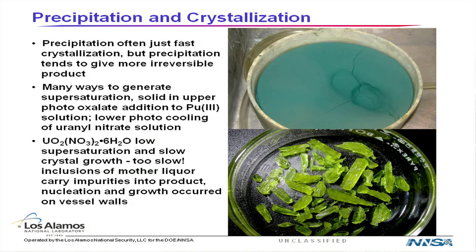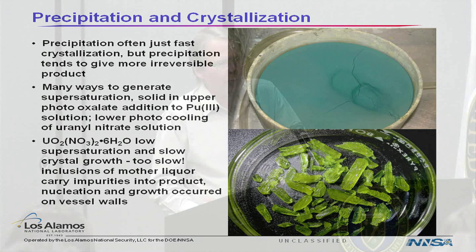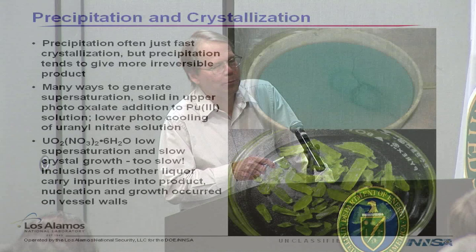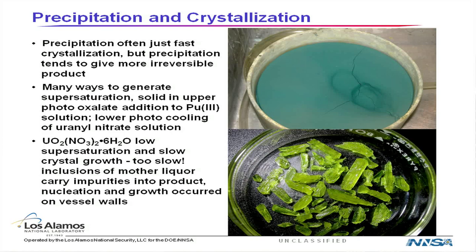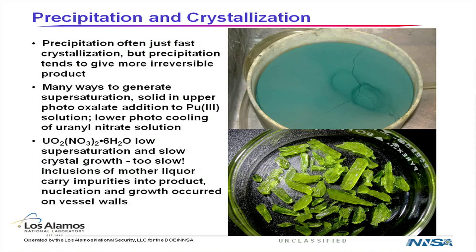What's the difference between precipitation and crystallization? Usually precipitation refers to a relatively irreversible process — you add something like hydroxide to precipitate a very insoluble hydroxide, or in this case, oxalic acid to a nitric acid solution of plutonium 3 to get plutonium 3 oxalate. This turquoise solid precipitates out and can be filtered. It's relatively irreversible because to get the plutonium back into solution, you have to use enough acid to redissolve the oxalate.